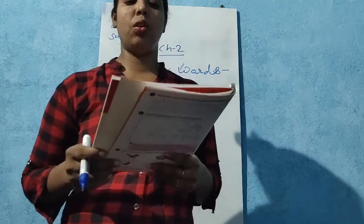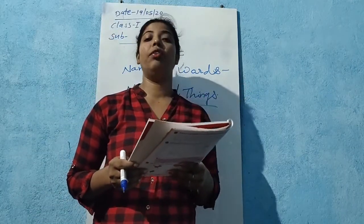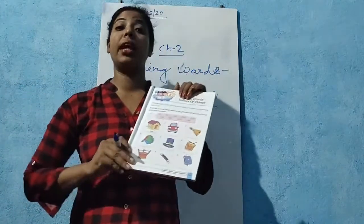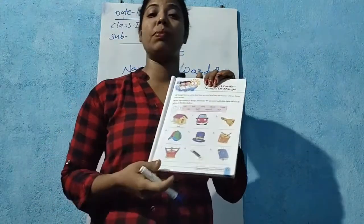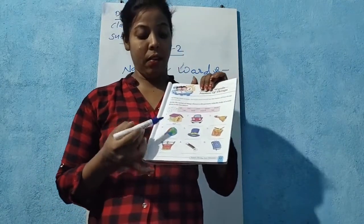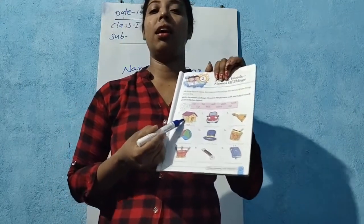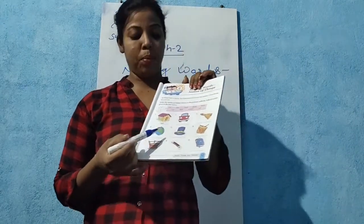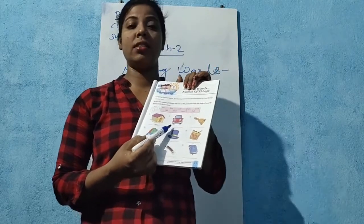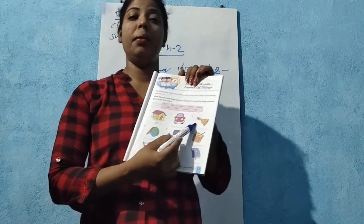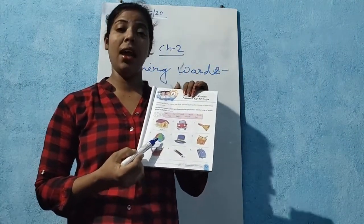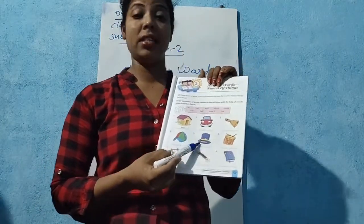Write the name of things in the pictures with the help of words given in the box below. Here is a picture. You need to see this picture and find the word in the help box in your book. One example is HUT. This is a car — C-A-R. This is a well — B-E-L-L. This is a cap. This is a hat — H-A-T.